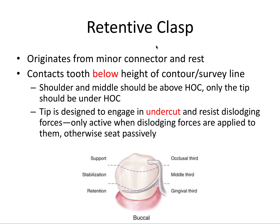We're going to focus mostly on extracoronal retainer design. The retentive clasp originates from the minor connector and the rest. A useful way to think about this is to divide the tooth into occlusal, middle, and gingival thirds. Each third generally corresponds to one key function: the occlusal third offers support, the middle third offers stability or stabilization, and the gingival third provides retention.